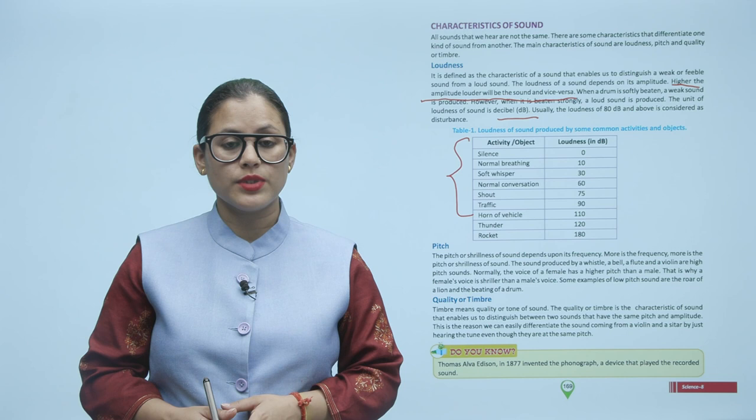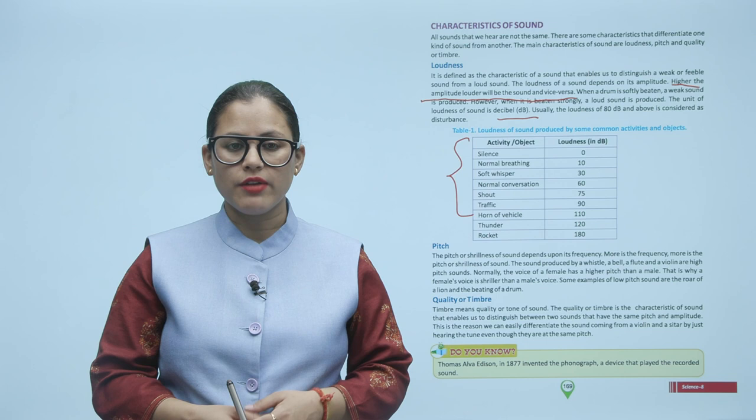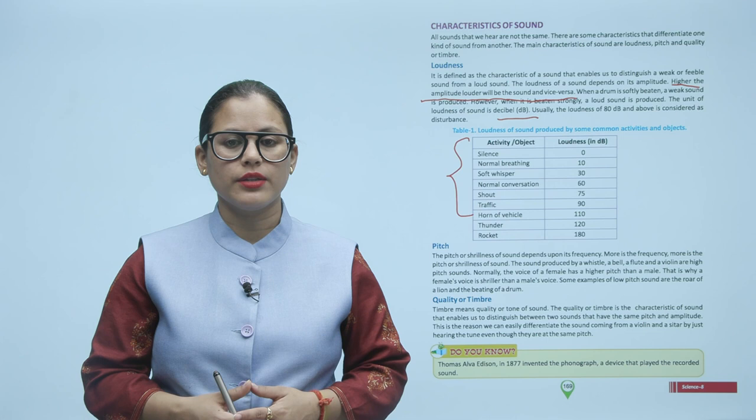The sound produced by a whistle, a bell, a flute, and a violin are high-pitched sounds. Normally, the voice of a female has a higher pitch than a male, which is why a female's voice is shriller. Some examples of low-pitched sounds are the roar of a lion and beating of a drum.